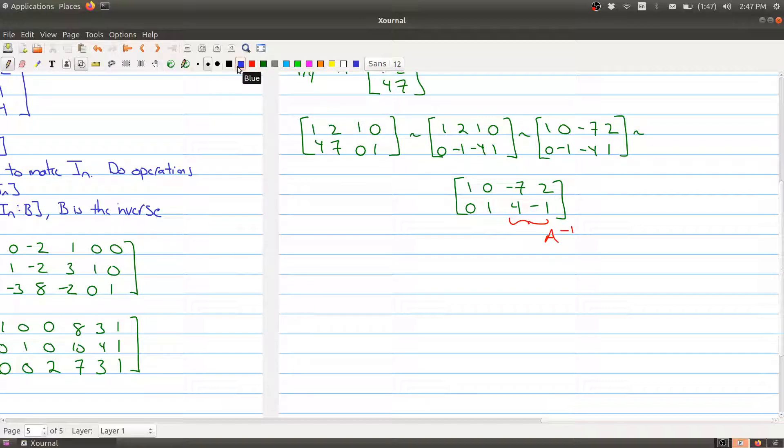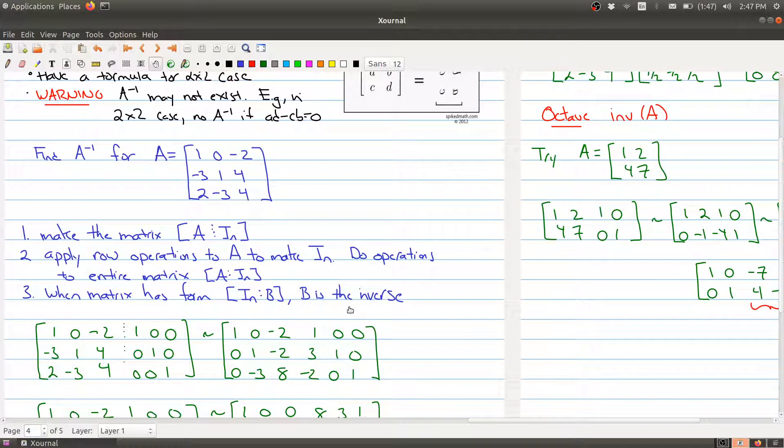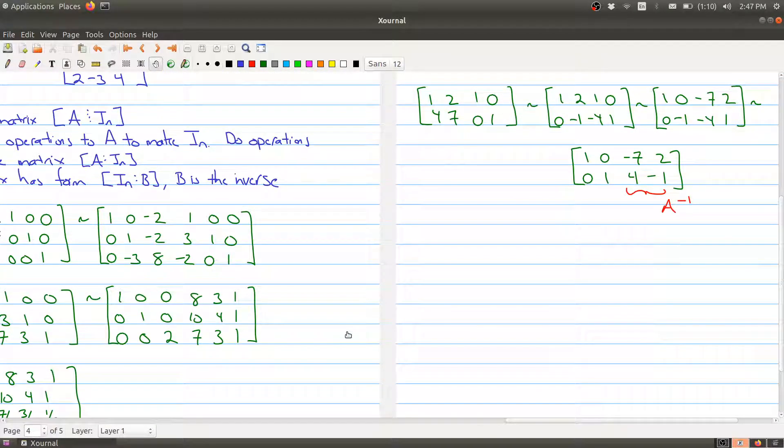Going back a little bit to my warning here, I said that sometimes the inverse may not exist. And when does that sort of thing happen? Well, let me just tell you when that might happen. As an example, if you get a row of zeros on the left-hand side, that's when you have no inverse.